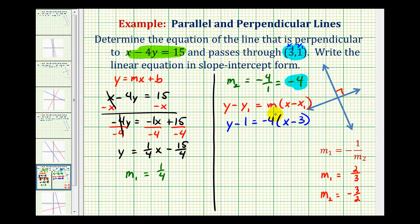So to clear the parentheses, we'll distribute, so we'll have y minus 1 equals negative 4x plus 12, and then we'll add 1 to both sides to solve for y. So the equation of our line that's perpendicular to the given line passing through the point (3, 1) would be y equals negative 4x plus 13.